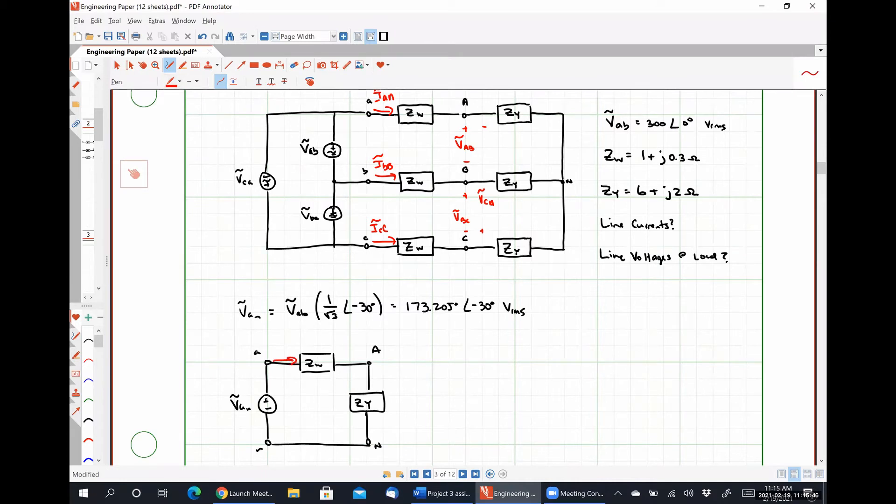All right, again we can find our line currents trivially, so we'll have IAA is equal to VAN, so that is 173.205 angle negative 30 degrees volts RMS divided by ZW plus ZY, which is going to be 7 plus J 2.3 ohms. And if I carry out that operation I get a line current of 23.507 angle negative 48.189 degrees amps RMS, and getting my other two line currents is simply shifting that so I'm not going to bother doing that anymore.